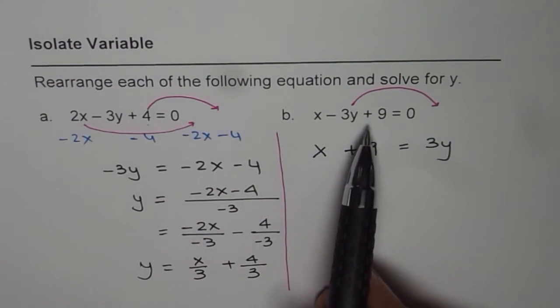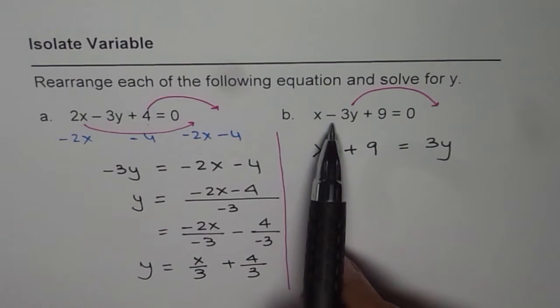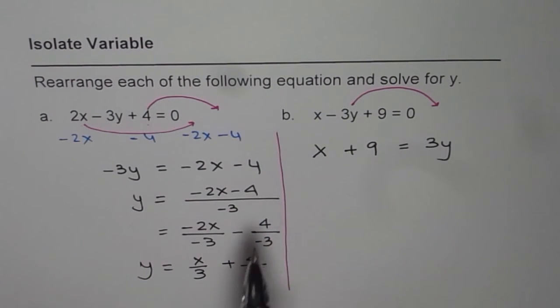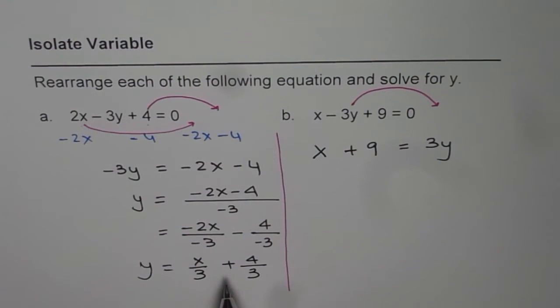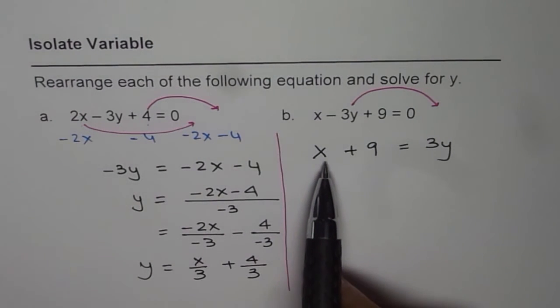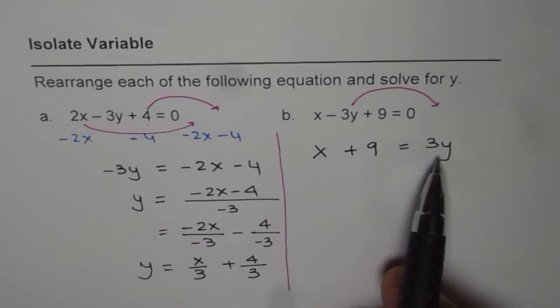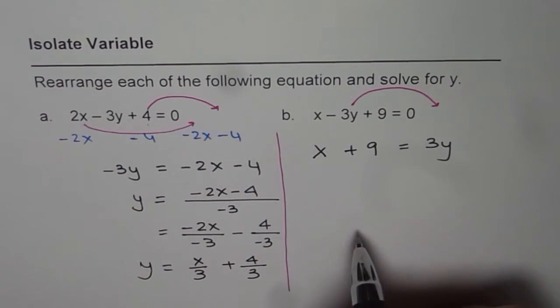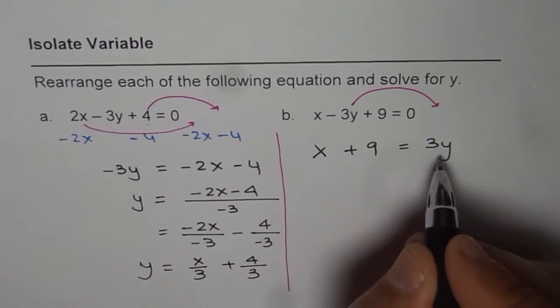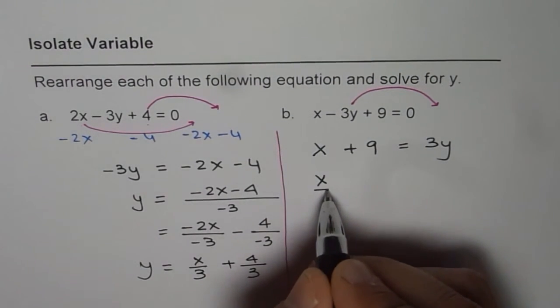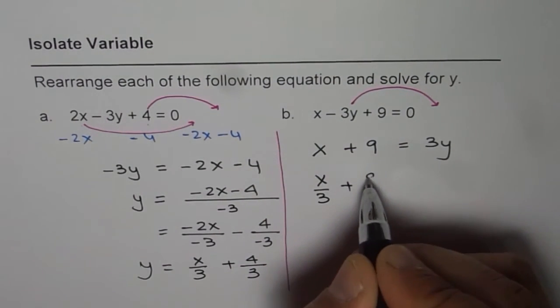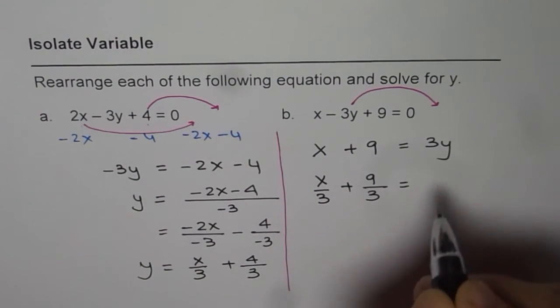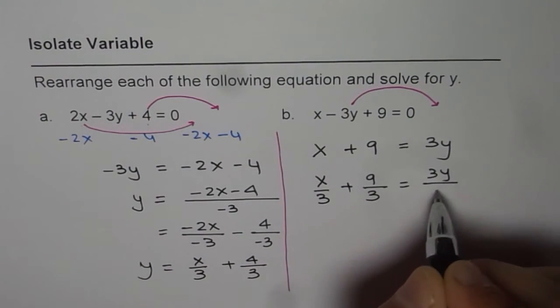So I prefer this method, especially when we have a negative coefficient for the variable of our interest. So we get x plus 9 equals to 3y, right? Now we can divide by 3 on both the sides. So if I divide every term by 3, it becomes x divided by 3 plus 9 divided by 3 equals to 3y divided by 3.